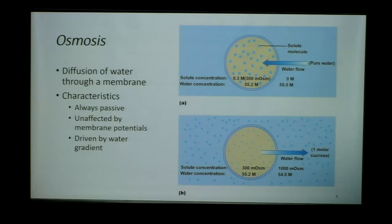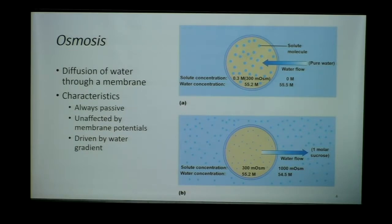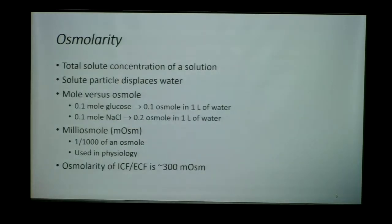In this first image, we can see that inside the cell we have solutes, and outside the cell we don't. So the direction water will move is from the area of high water concentration, or low solute concentration, to an area of low water concentration, which happens to be high solute concentration. Alternatively, we see another scenario where we have higher solute concentration outside the cell than inside, and so the water moves from high concentration inside to lower concentration outside where we have more particles.